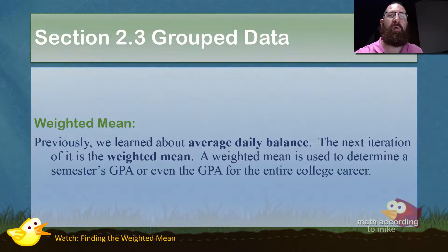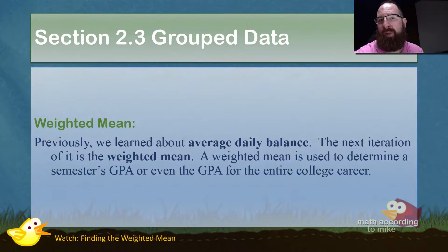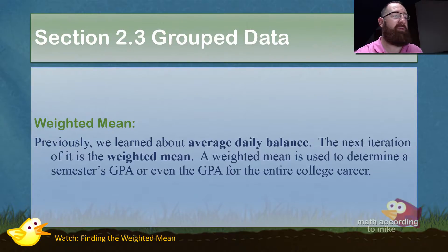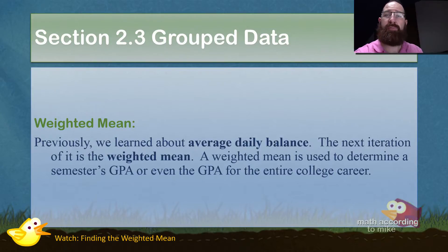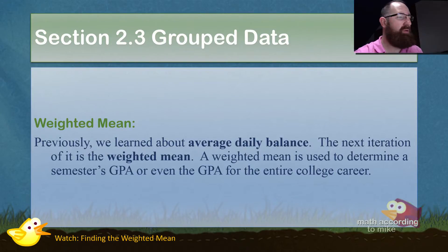So the test score would be carrying a higher weight than the final score, for example. In the last video for this section, we just work through figuring out a GPA. So please watch the video on finding the weighted mean.